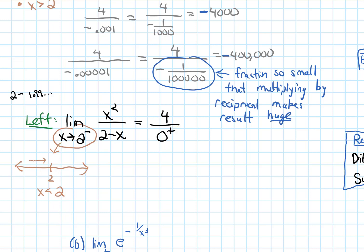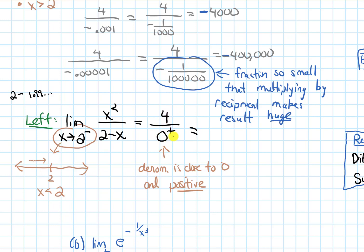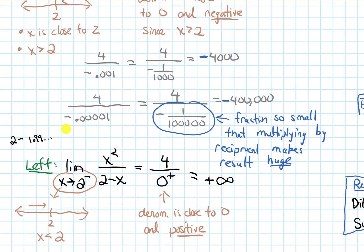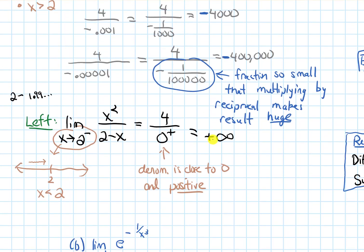I'll write zero with a little plus sign, meaning the denominator is close to zero and positive. For the same reason as above, dividing four by a really tiny number makes the result huge. The top is positive, the bottom is positive, so the whole thing is positive infinity. So the limit from the right was negative infinity and the limit from the left was positive infinity.